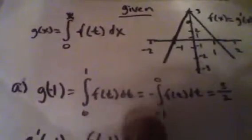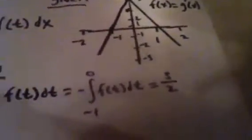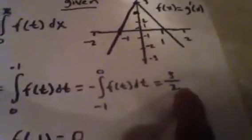For g(-1), all we've got to do is plug in negative 1 into the function. Since it's a negative number, we have to flip it and put it on the bottom and change the sign. We simply integrate and plug in, and then we get 3/2.